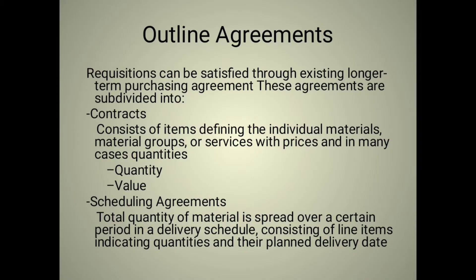Scheduling agreements, quantity contracts, and value contracts are very famous examples of outline agreements. Your company may have a tie-up with Star Health Insurance. In this situation, you will select them for updated or new insurance policies for your employees.